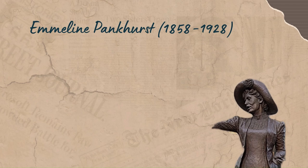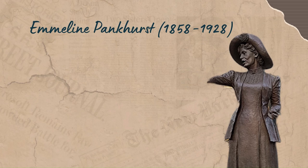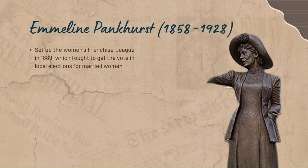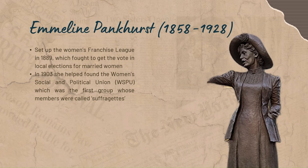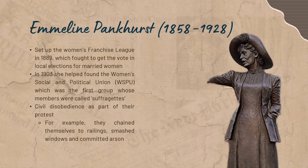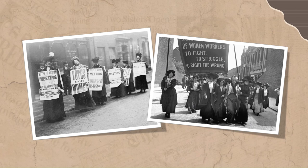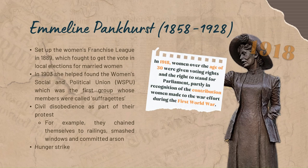Emmeline Pankhurst (1858–1928). Emmeline Pankhurst was born in Manchester in 1858. She set up the Women's Franchise League in 1889, which fought to get the vote in local elections for married women. In 1903 she helped found the Women's Social and Political Union (WSPU) — the first group whose members were called suffragettes. The group used civil disobedience as part of their protest, including chaining themselves to railings, smashing windows, and committing arson. Many of the women, including Pankhurst, went on hunger strike. In 1918, women over the age of 30 were given voting rights and the right to stand for Parliament, partly in recognition of the contribution women made during the First World War. Shortly before Pankhurst's death in 1928, women were given the right to vote at the age of 21 — the same as men.